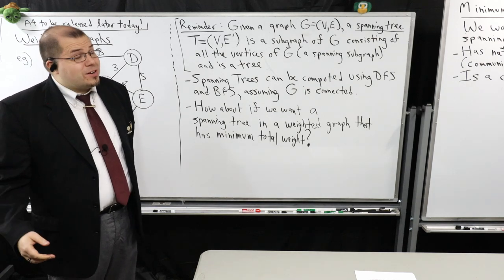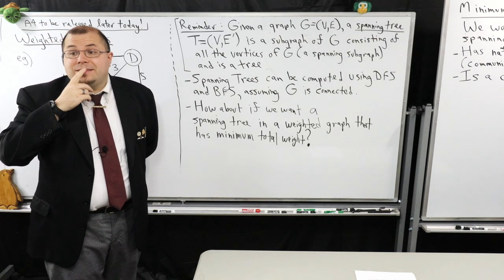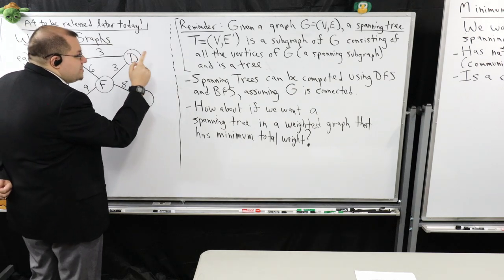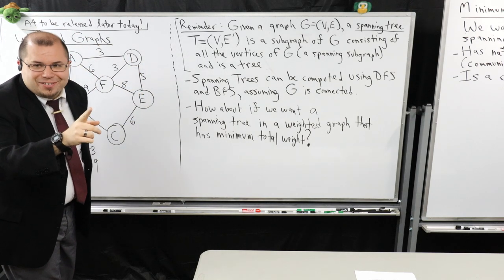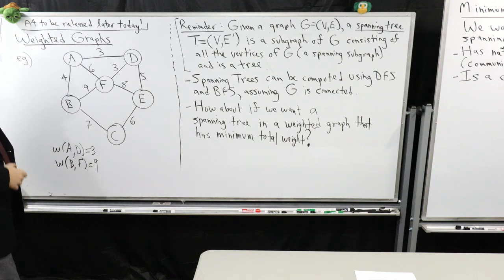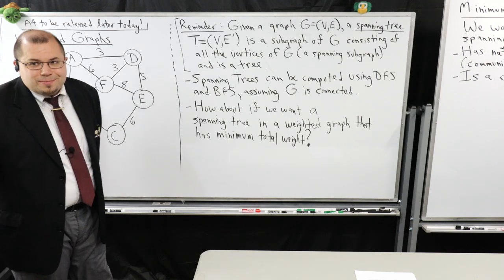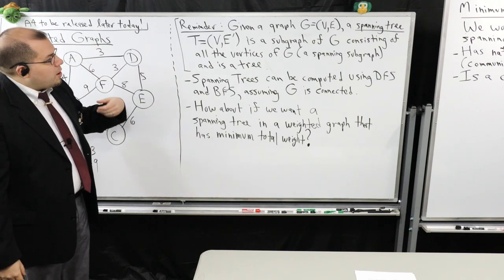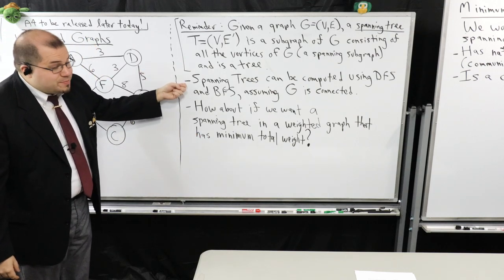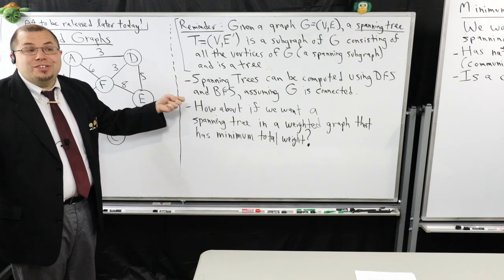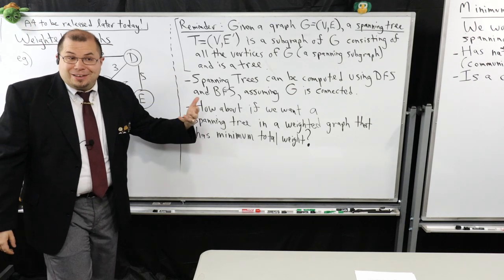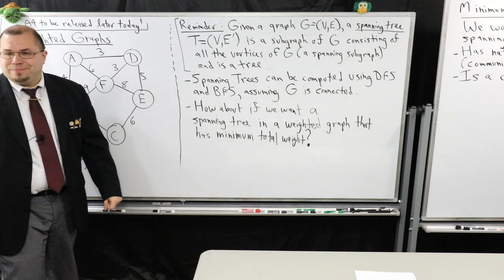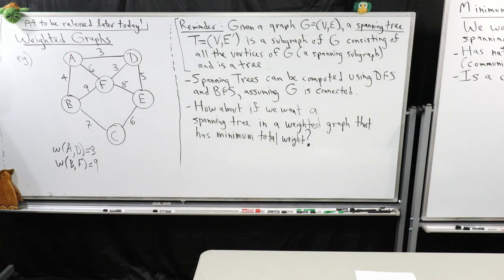It does depend on the starting point, but exactly — it involves the discovery edges. Those discovery edges form a tree. In DFS we call that the DFS tree, and in BFS we call it the BFS tree. So if you wanted to get a spanning tree, all you have to do is give me that tree formed by those discovery edges.